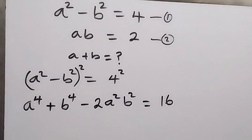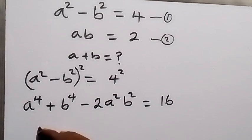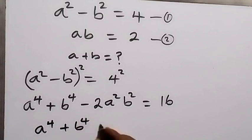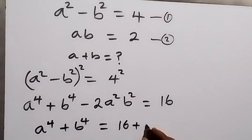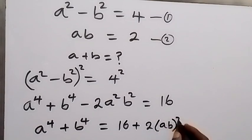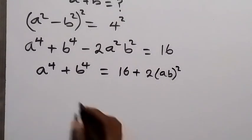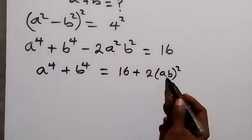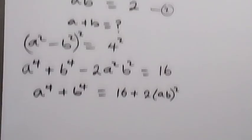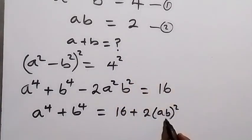In the next step, let's take minus 2a²b² to the other side, and this becomes a raised to power 4 plus b raised to power 4 equals 16 plus 2a²b². We can write it as 2 into bracket ab squared, from the law of indices. We can substitute the value of ab from equation 2. We have ab equals 2.